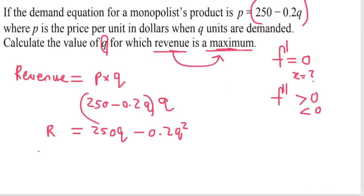So we have to differentiate this, which gives us our marginal revenue, which is 250 minus 0.4Q. Now, after differentiating this,